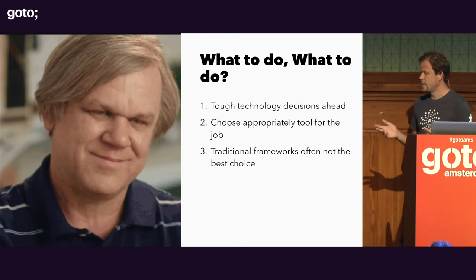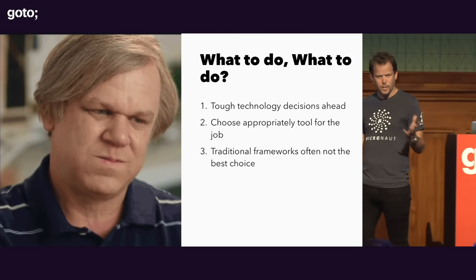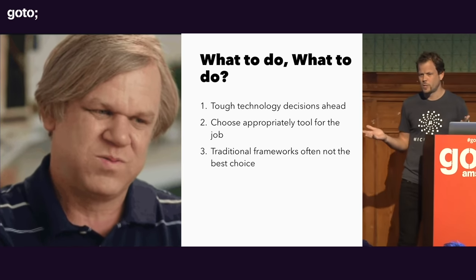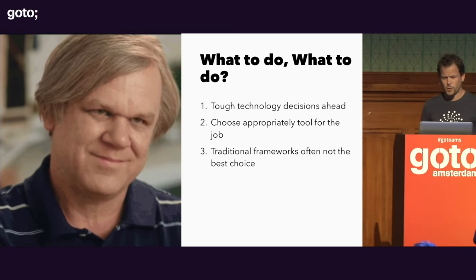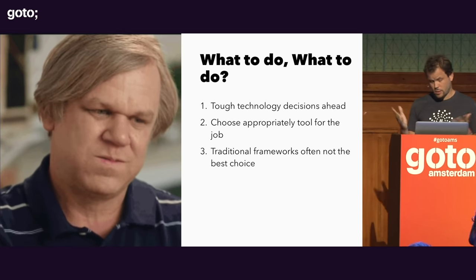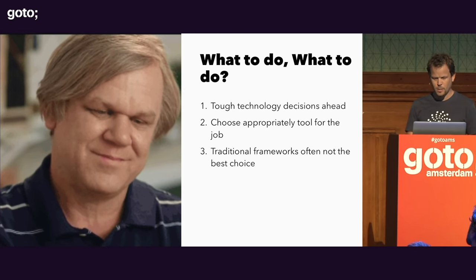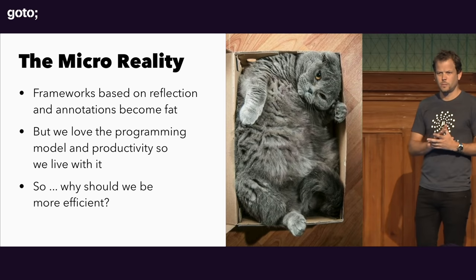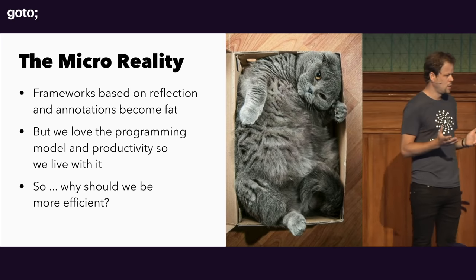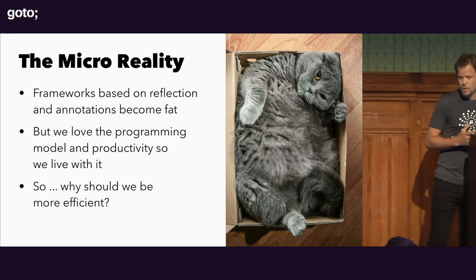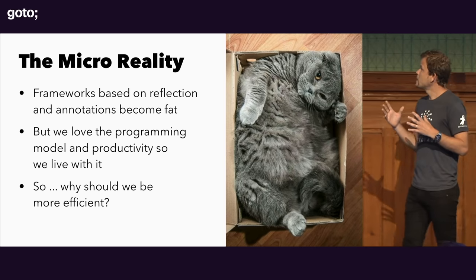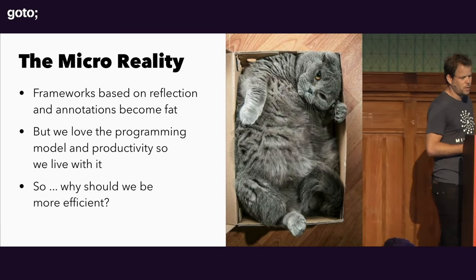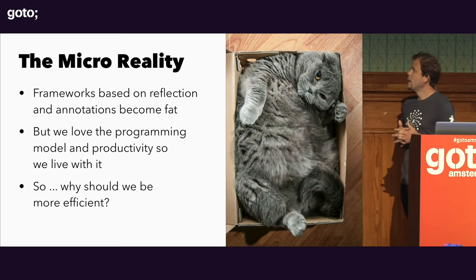I want to differentiate here between Spring the container — the dependency injection container — and Spring the library, because there are many fabulous libraries for Spring, many of them usable without the container. The micro-reality is that frameworks based on reflection, which is how pretty much most Java frameworks work today, become fat pretty quickly. We love the programming model and the productivity that things like Spring give us, so we live with it.